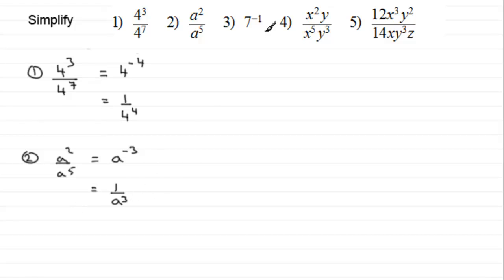Number 3, we've got 7 to the power minus 1. 7 to the power minus 1 is the same as 1 divided by 7, or 1 seventh.